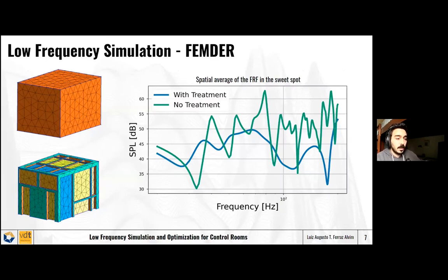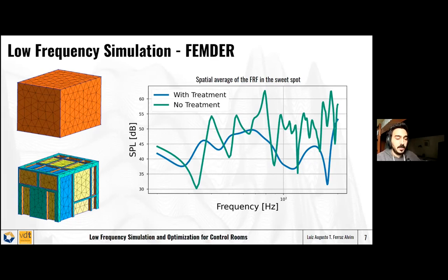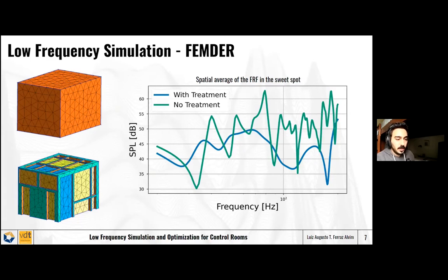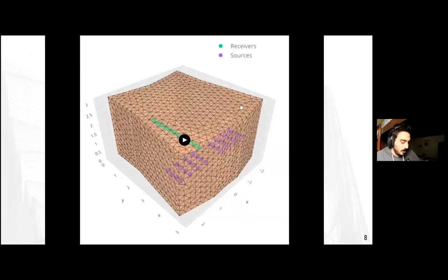This is a frequency response of the untreated room and the treated room. In green we can see all the peaks and dips — it's a very non-damped room. When we add treatment, we damp a lot of the peaks and dips and end up with a smoother response, which is of course what we usually want. This covers the low-frequency simulation part. Now I shall introduce the optimization part of this talk, which is what I'm most concerned with and think is my main contribution.